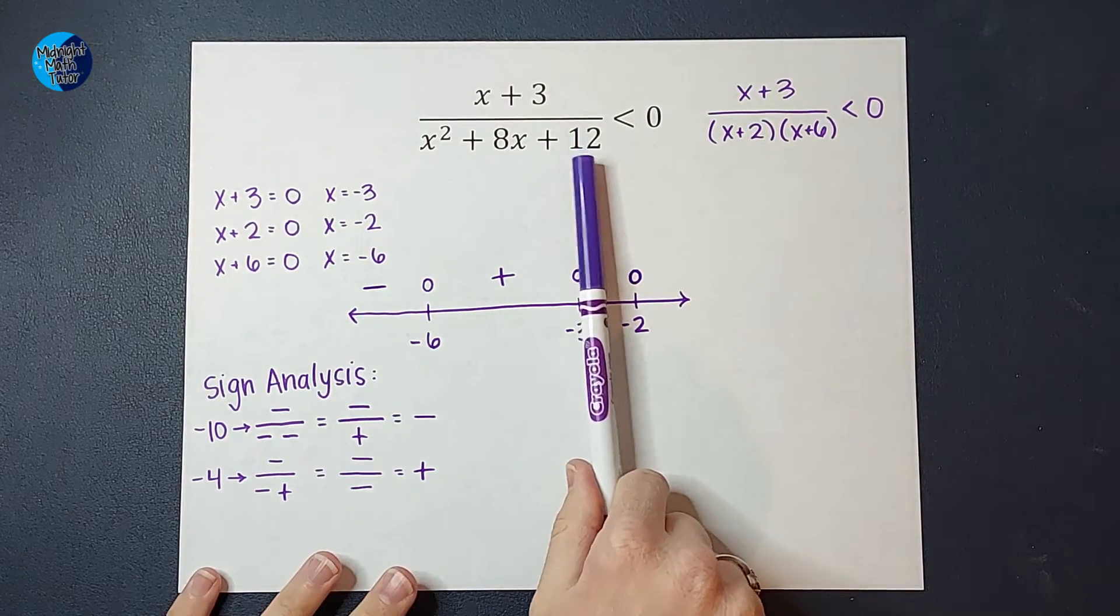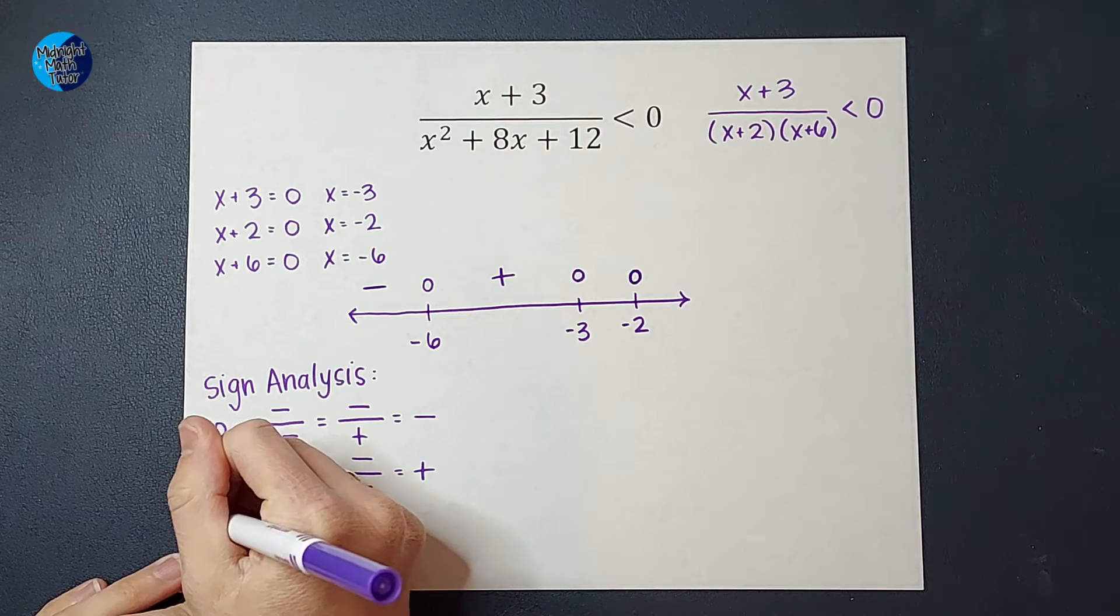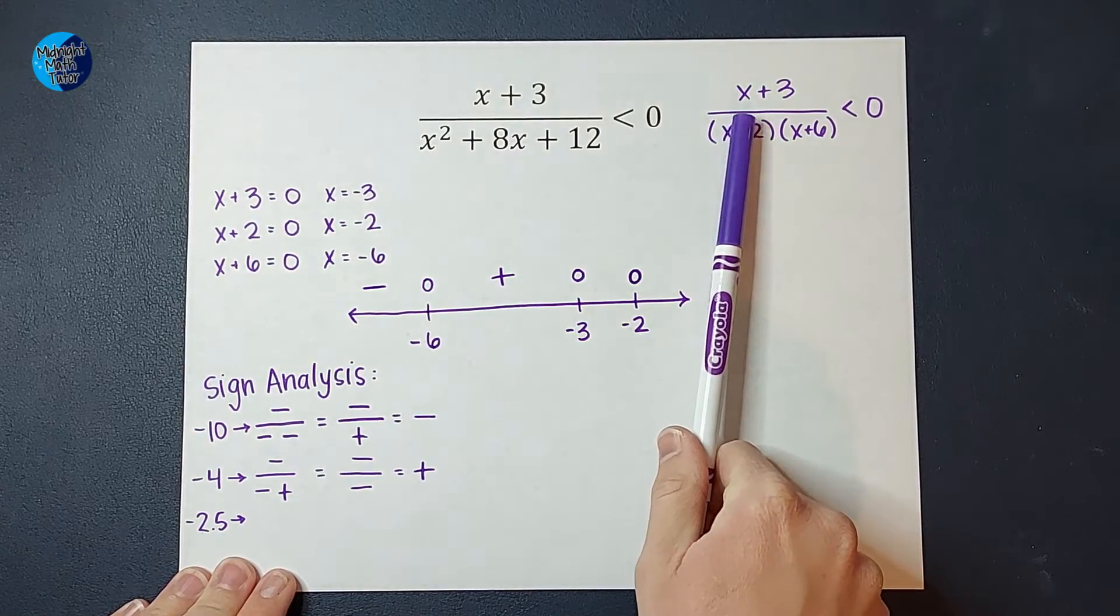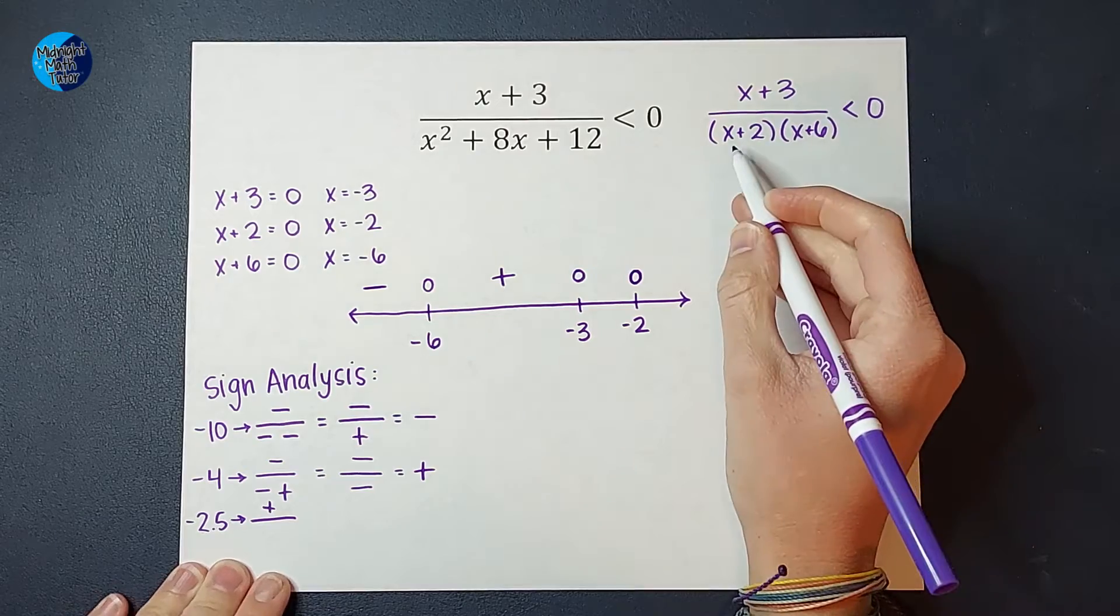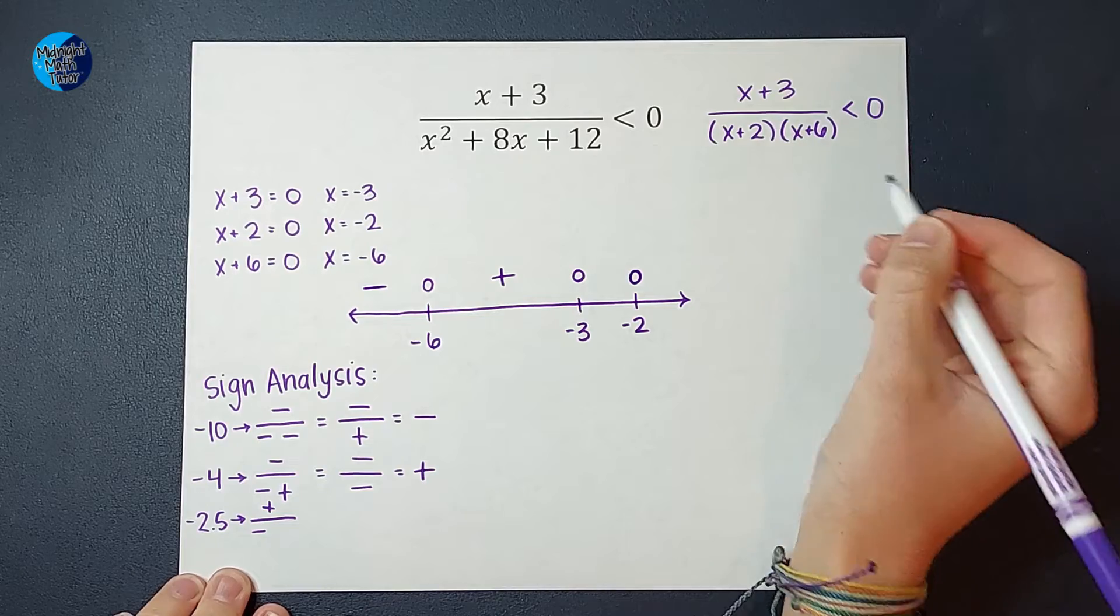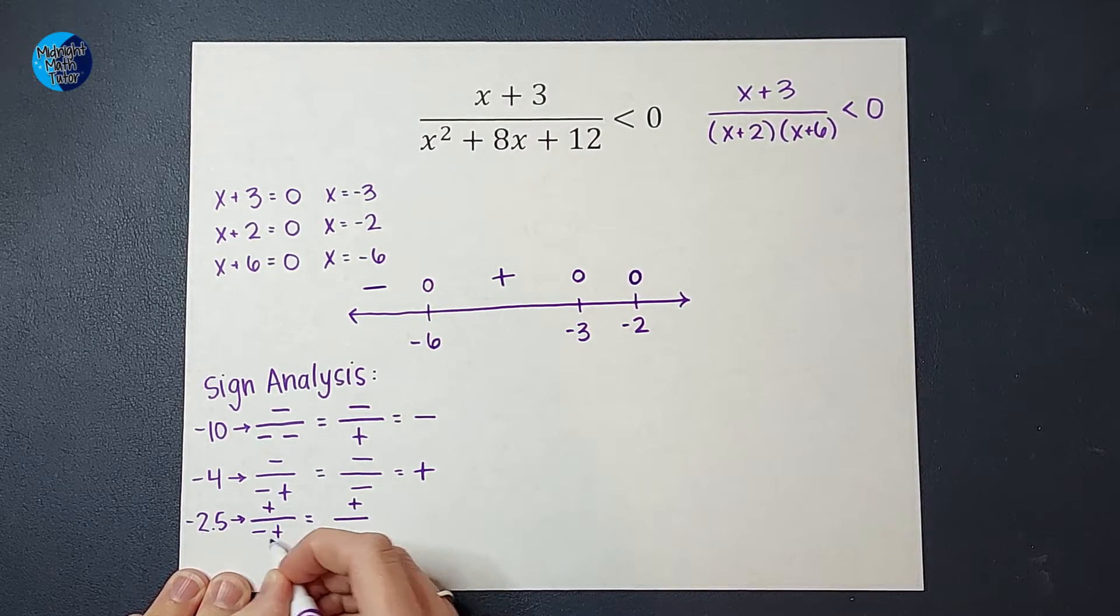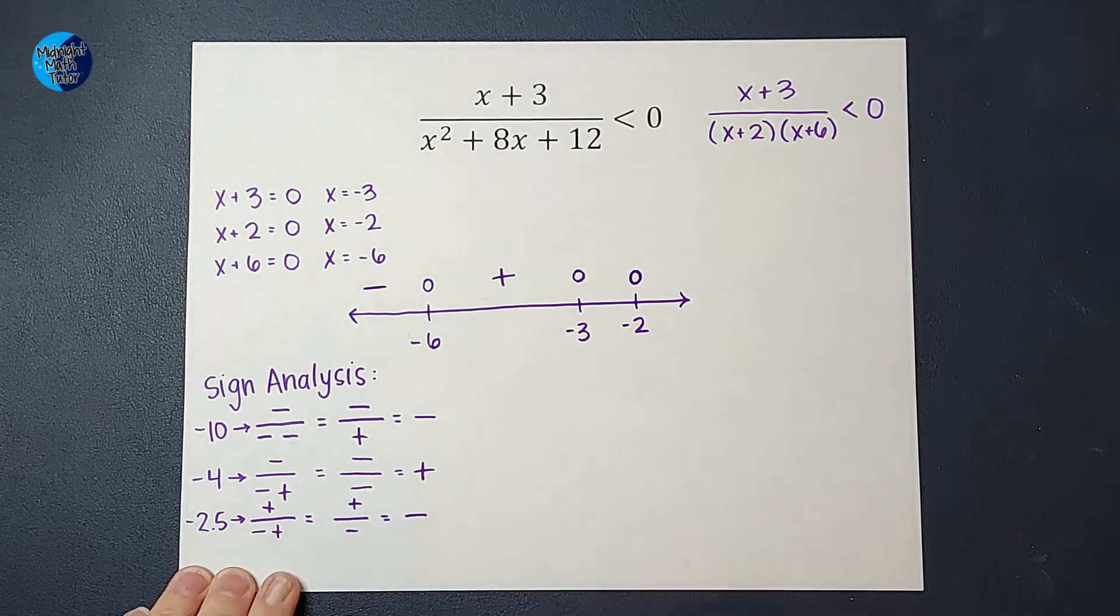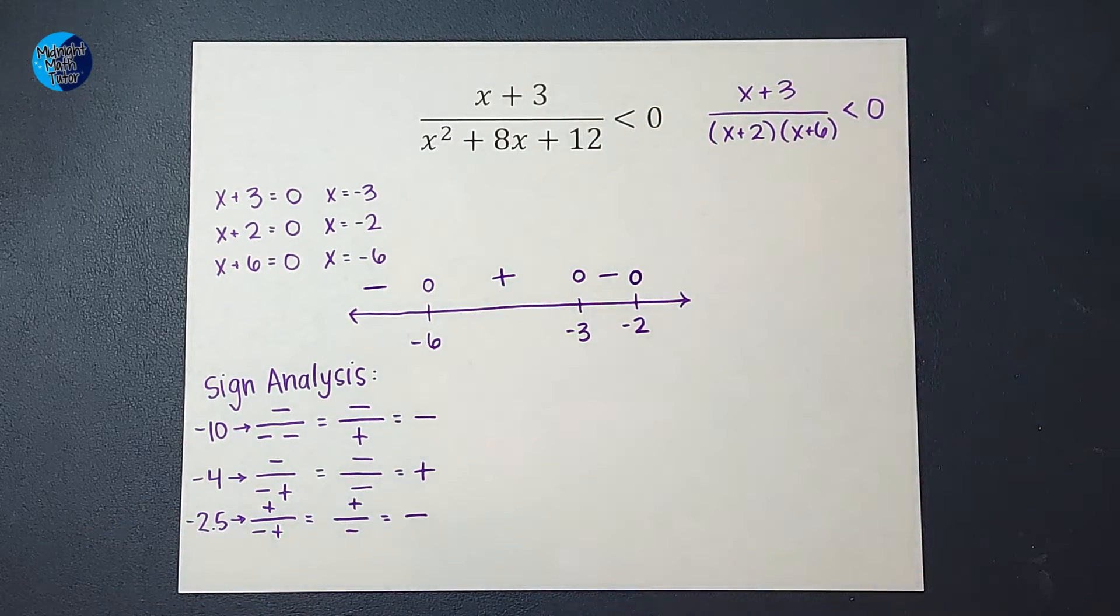Next, we are going to pick a number between negative 3 and negative 2. So let's pick negative 2.5. And when I plug that in, negative 2.5 plus 3 would give me a positive. Negative 2.5 plus 2 would give me a negative. Negative 2.5 plus 6 would give me a positive. So on top, I have positive. On bottom, those would multiply and be negative. Positive divided by negative is negative. So this region, we're negative.